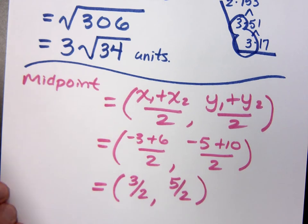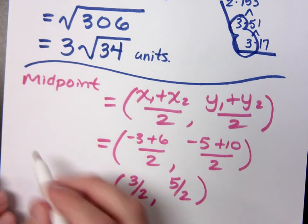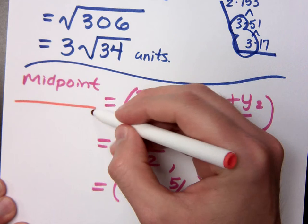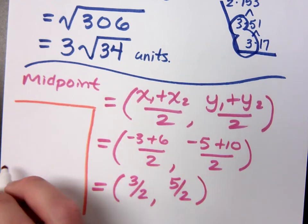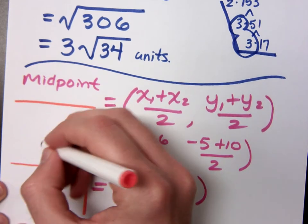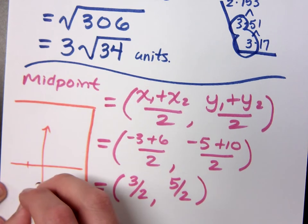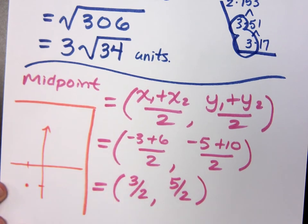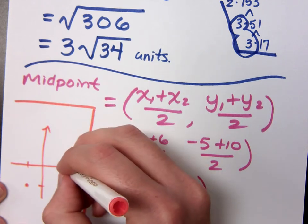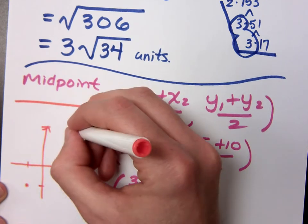Just to verify that what you have here makes sense, if you did a very rough and cheap graph, I've got negative 3, negative 5 is right here. The other ordered pair is 6, 10. So here's 6, 10, somewhere up here. So here is the line segment that connects these two guys.